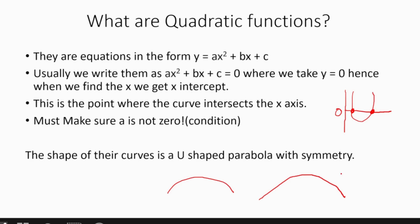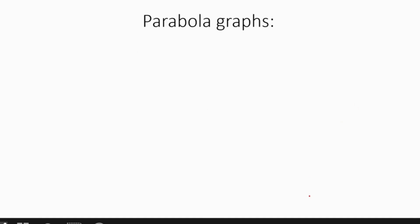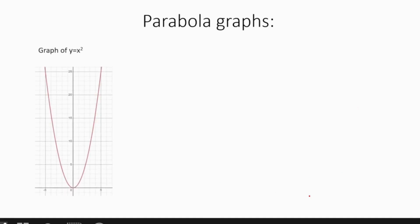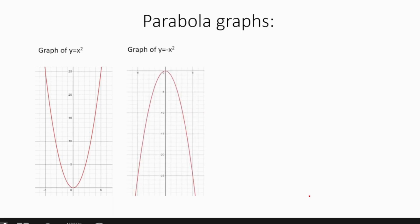Alright, let's check out the parabolic graphs. First we are going to check the graph of y = x², and as you can see it's a u-shaped parabola with symmetry. Now let's check when the coefficient is minus one — as you can see here, it inverts itself.